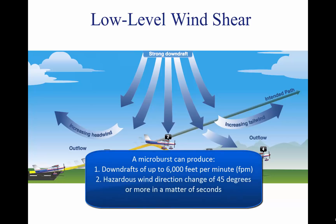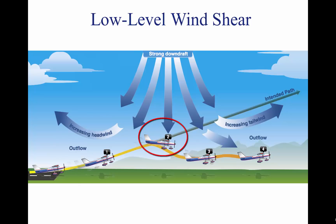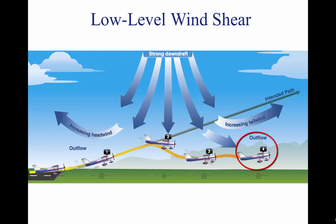A microburst can also produce a hazardous wind direction change of 45 degrees or more in a matter of seconds. During an inadvertent takeoff into a microburst, the plane first experiences a performance-increasing headwind (Figure 1), followed by performance-decreasing downdrafts (Figure 2). Then the wind rapidly shears to a tailwind (Figure 3), and can result in terrain impact or flight dangerously close to the ground (Figure 4). A pilot must be prepared to react immediately to the changes to maintain control of the aircraft.